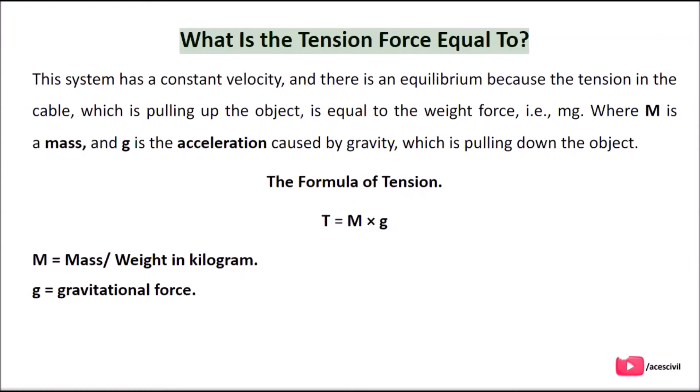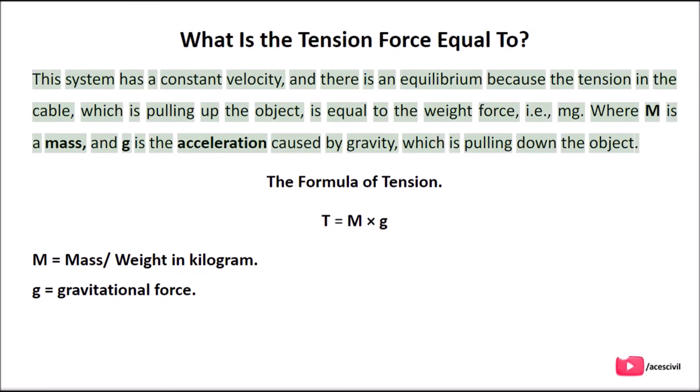What is the tension force equal to? In a system with constant velocity, there is equilibrium because the tension in the cable — which is pulling up the object — is equal to the weight force, i.e., mg, where m is the mass and g is the acceleration caused by gravity, which is pulling down the object.